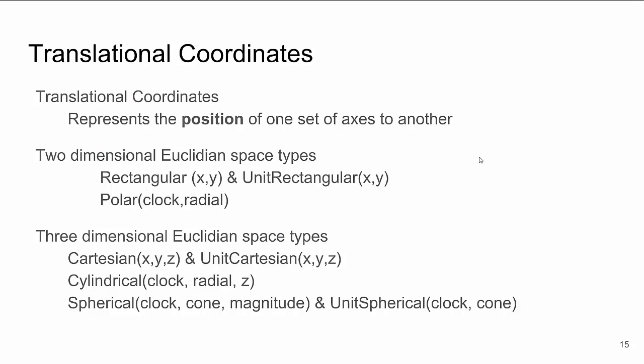Now we'll move on to translational coordinates. Translational coordinates in components represent the position of one set of axes to another. Two-dimensional Euclidean space types include Rectangular (X and Y), UnitRectangular, and Polar (clock and radial). Three-dimensional types include Cartesian, UnitCartesian, Cylindrical, Spherical, and UnitSpherical. The unit types ensure that the magnitude of the vector formed is always equal to one.